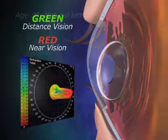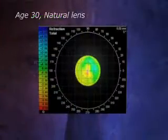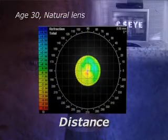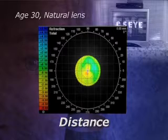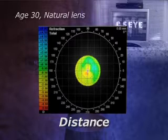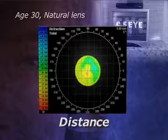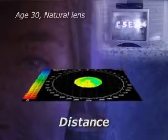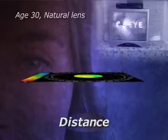For example, this is a wavefront map of a younger woman's eye focusing on an object in the distance, such as the TV. The image is all green, which indicates excellent distance vision. The eye is healthy and working normally.